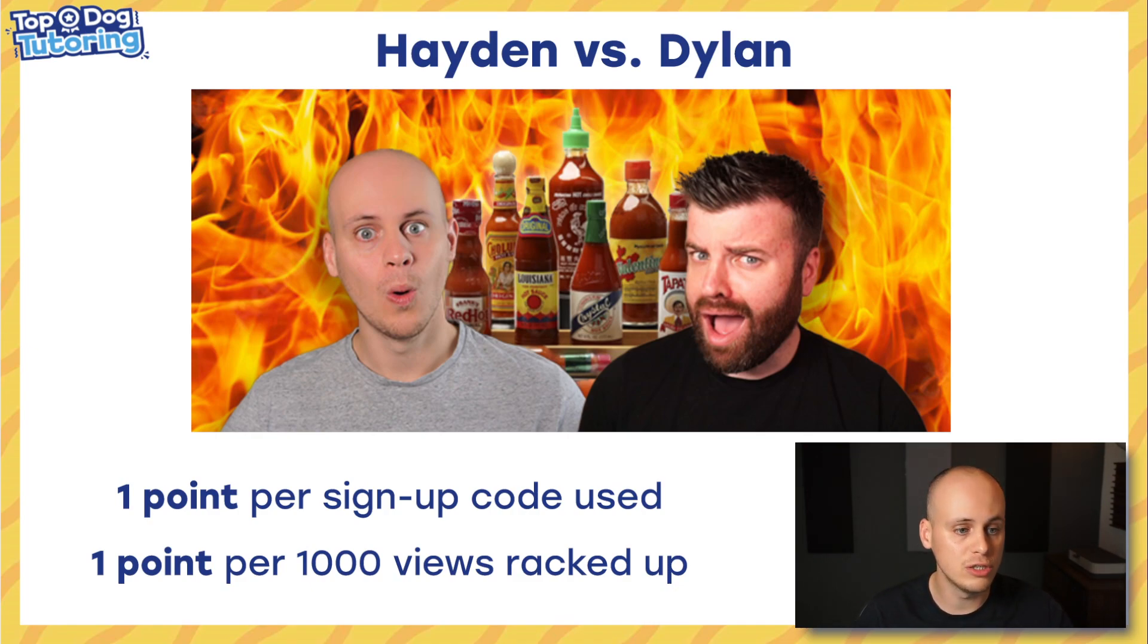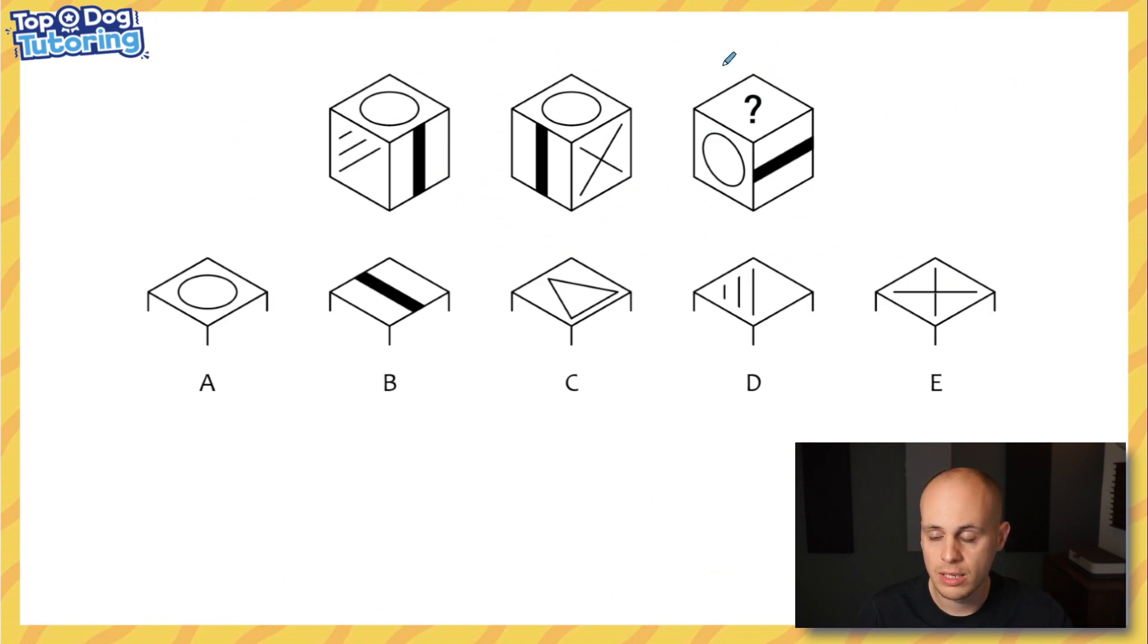Last video, Dylan left you with a question, a spatial reasoning question. Very, very, very nasty question. He's been tackling some pretty hard stuff, but I'm going to show you the answer to see if you got it right. Let us know in the comments if you did. There it is. So the answer was E. The best way to see that is just going from this cube to that cube. You can see the red line there represents the same edge, which means the X is our missing side, our missing face rather.